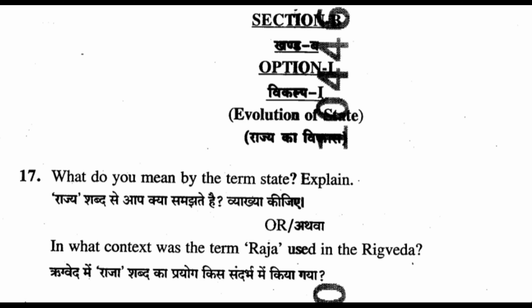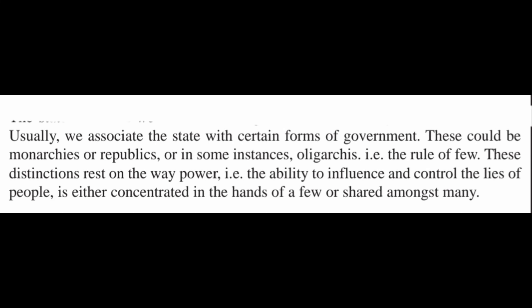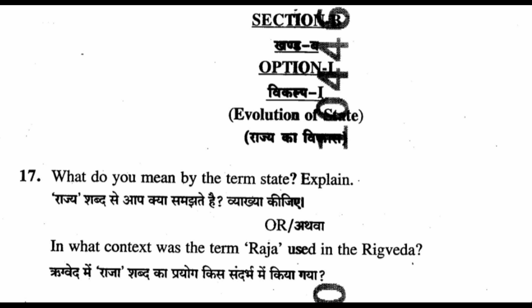Section B, Option 1, Question 17: What do you mean by the term 'state'? Usually we associate the state with certain forms of government — this could be monarchies, republics, or in some instances oligarchies, that is the rule of a few. This distinction rests on the way power — the ability to influence and control the lives of people — is either concentrated in the hands of a few or shared among many. Question 17 (alternate): In what context was the term 'Raja' used in the Rig Veda? In the Rig Veda, the term Raja was used as an adjective for a number of gods and occasionally to describe powerful men. These men did not control a vast army or large administrative system; their main source of power was probably derived from leadership in warfare.